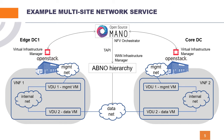This is the multi-site hackfest multi-VDU example network service used for this demonstration. It consists of two virtual network functions, each to be deployed in a different data center — one at the edge data center and the other at the core data center. Each virtual network function consists of two virtual deployment units, VDUs for short, implemented by virtual machines. The management virtual machine represents the management unit of the VNF, while the data virtual machine is for data processing. Both virtual machines are interconnected by an internal virtual network within the VNF.